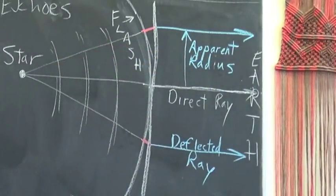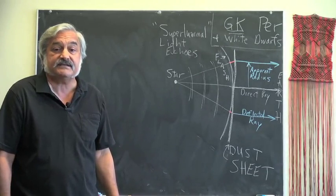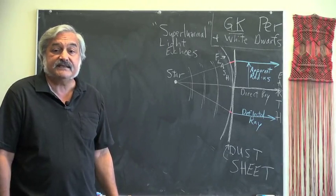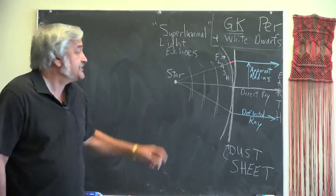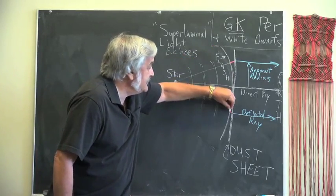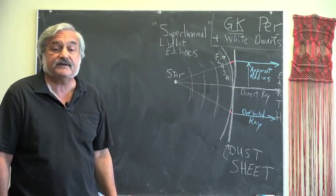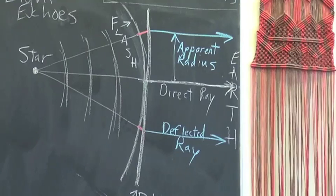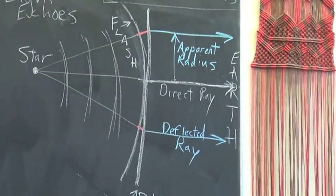As the bubble expanded, other parts of it finally intersected the sheet. Notice that the additional distance that the light bubble actually traveled, shown here in red, was actually very small. So it occurred soon after the initial contact. But the apparent radius of the deflected rays, shown here in blue, could be quite large.